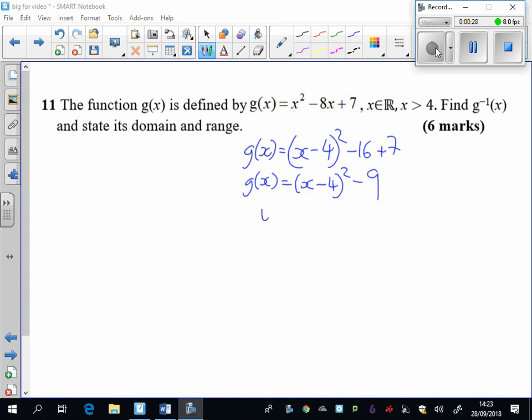If I want to find the inverse, then I'm going to switch the signs over and rearrange. So I've got x plus 9, all square rooted, plus the 4. There's my inverse function there.